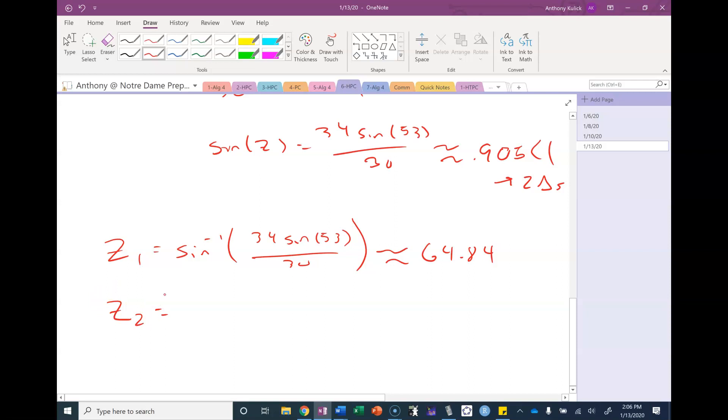To find angle z in the second triangle, angle z in the second triangle will always be the supplement. So that's how I got 115.16.